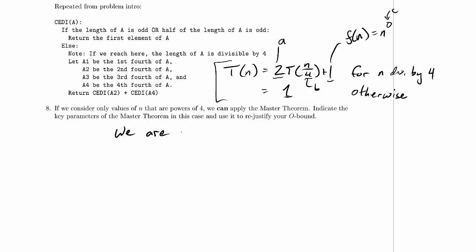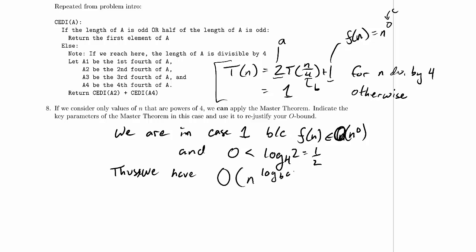We are in case 1 because f(n) is an element of big O of n to the 0, and 0 is less than the log base 4 of 2, which is 1 half. So 0 is less than 1 half, thus we have a bound of O of n to the log base b of a, and that is n to the 1 half, which is square root of n. And that does indeed re-justify our big O bound.